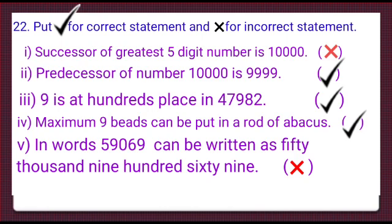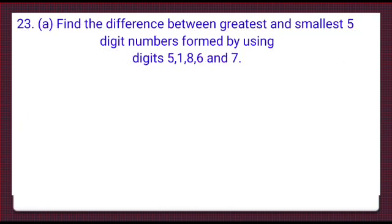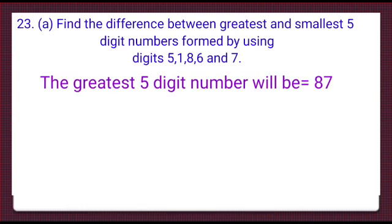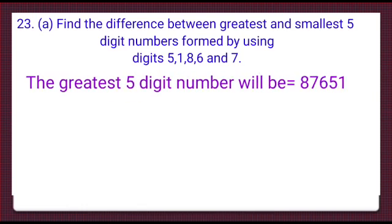Now, here is the A part of 23rd question. Find the difference between greatest and smallest 5 digit numbers formed by using digits 5, 1, 8, 6 and 7. Let's form the numbers using these digits. For forming greatest number, we will use them in decreasing order. Yes, the greatest 5 digit number will be 8, 7, 6, 5 and 1.